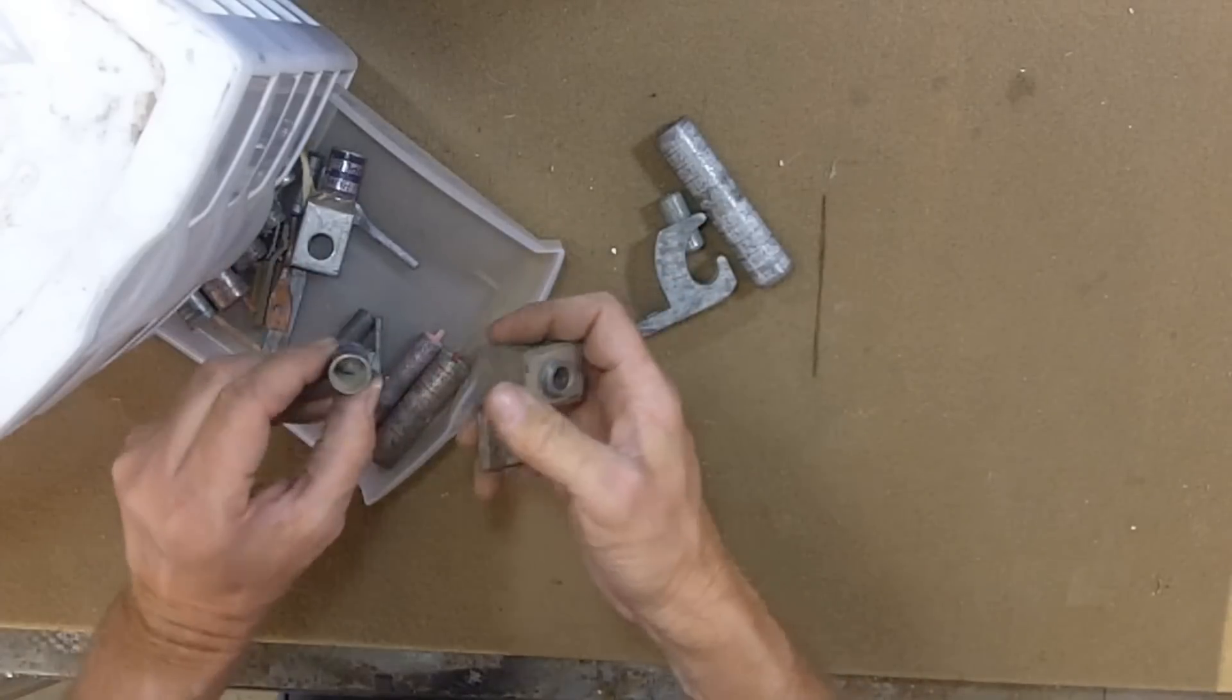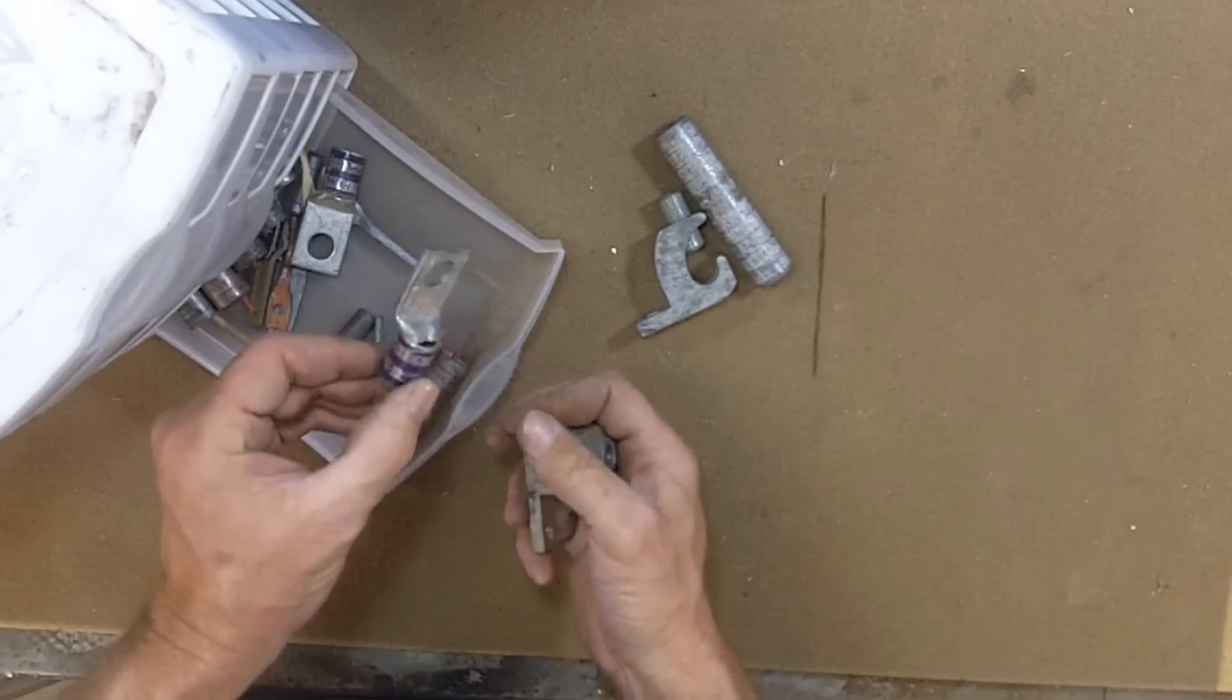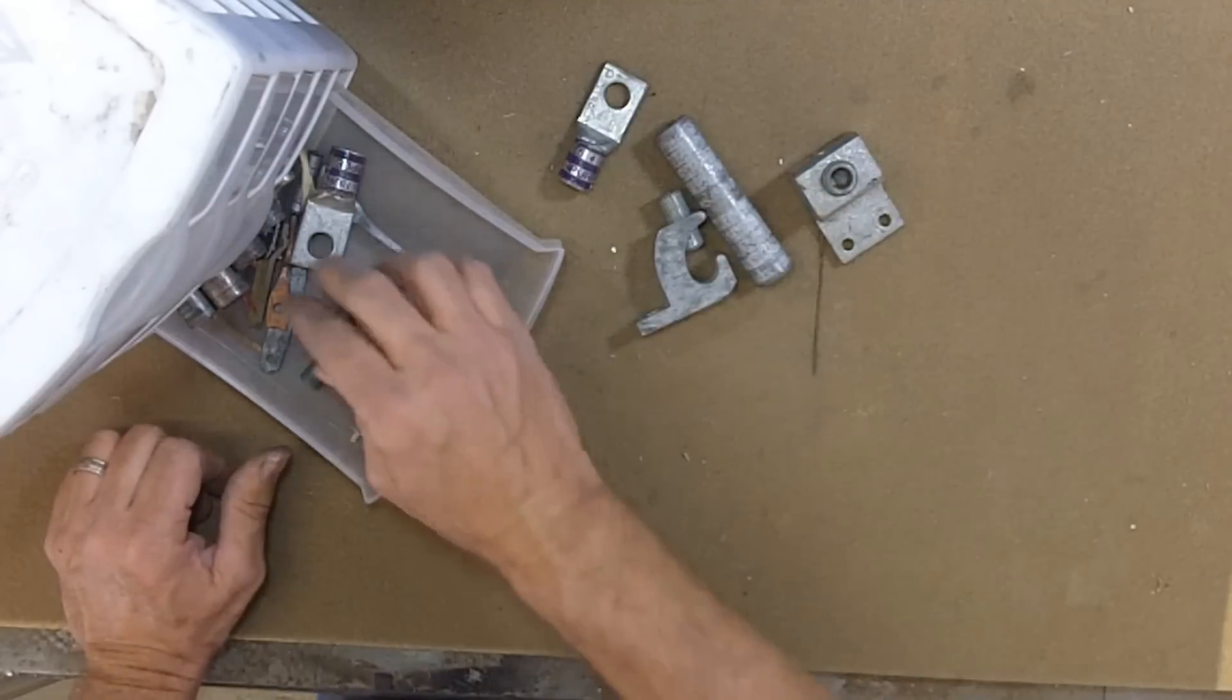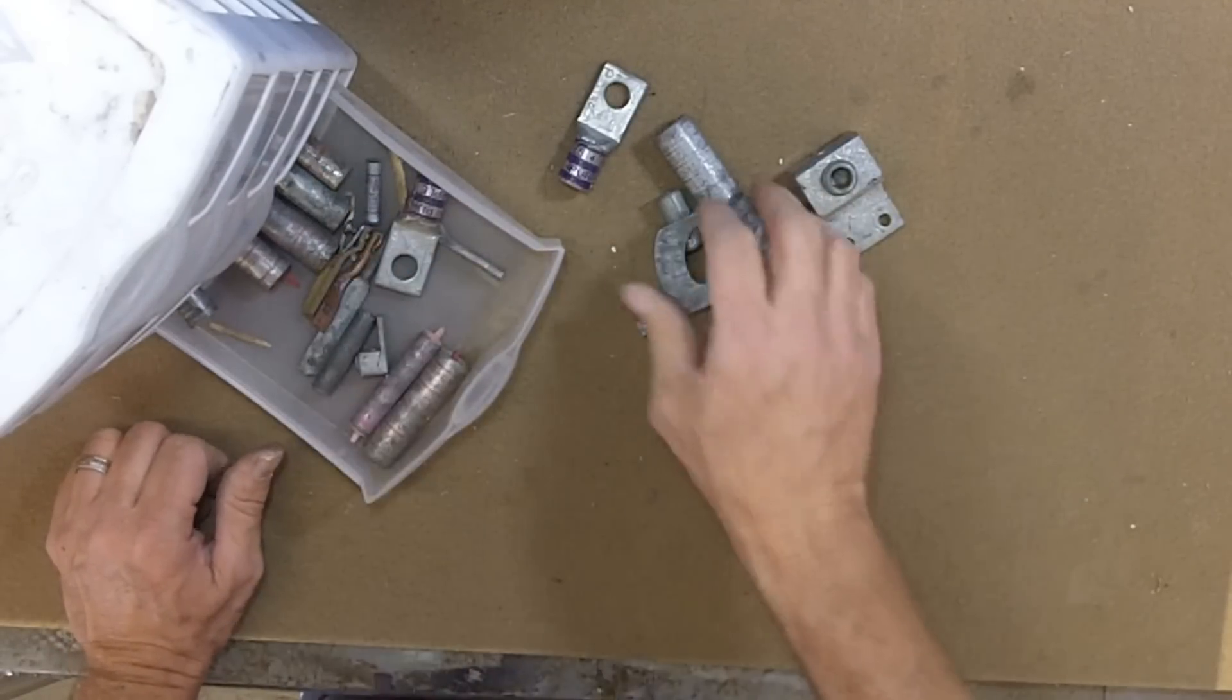You got some lugs, here's some larger terminal ones, this is for a 4-0. You need a large set of crimpers for that, I don't have a pair to show you, sorry about that. A bunch more butt splices down in there.